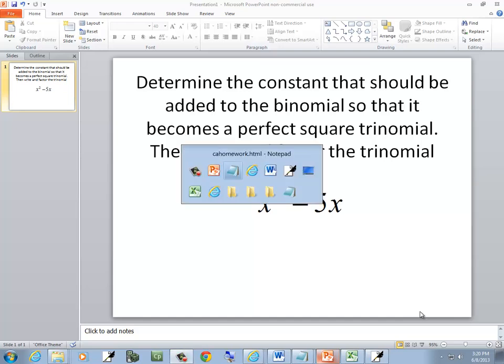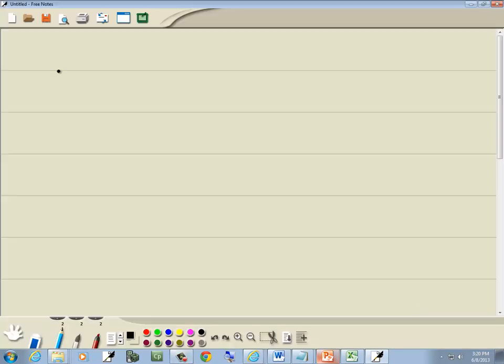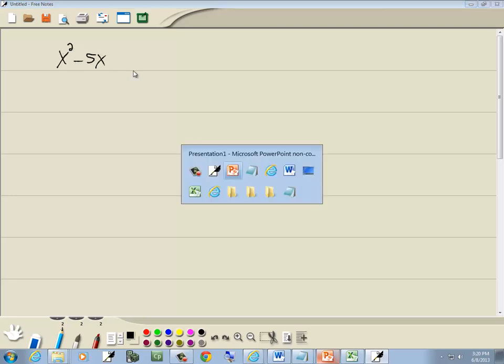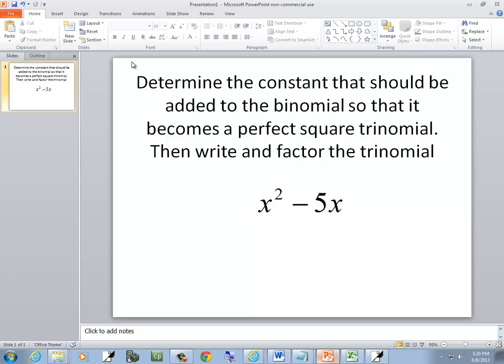Let's take a look at this problem. We've got x squared minus 5x. Determine a constant that should be added to the binomial so it becomes a perfect square trinomial.